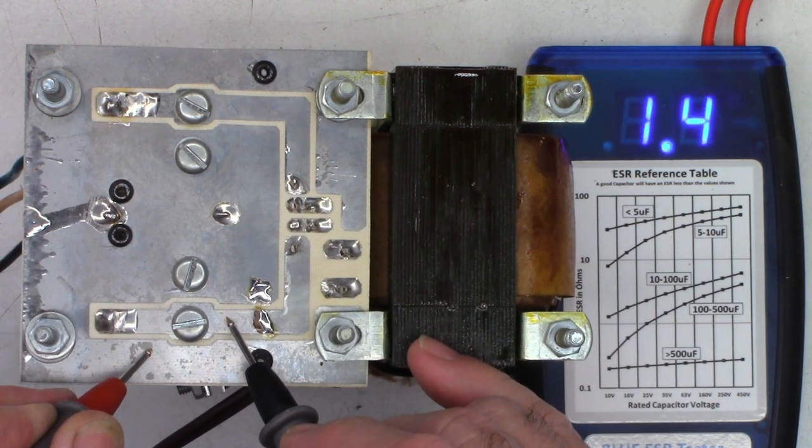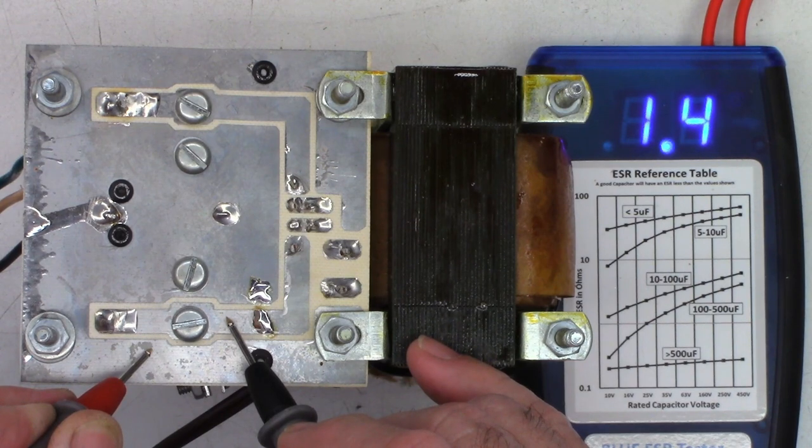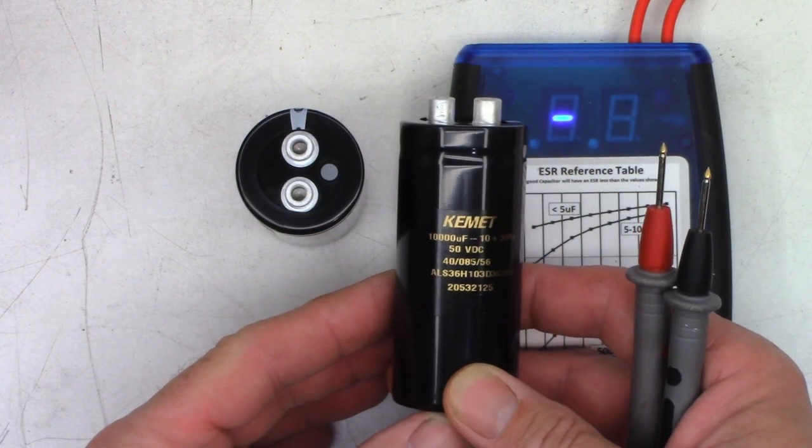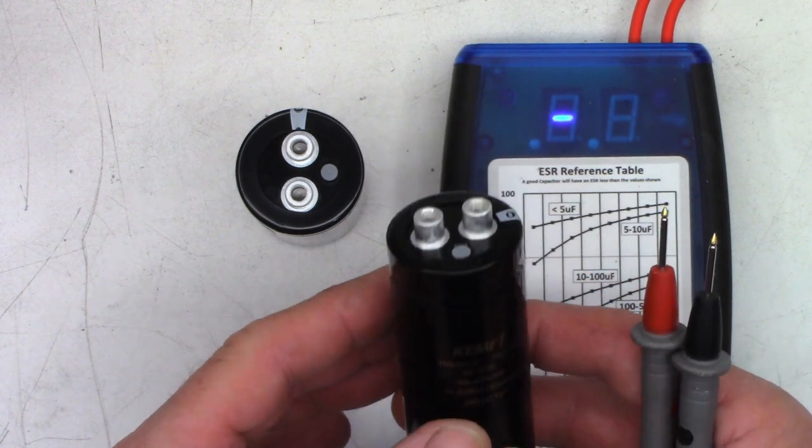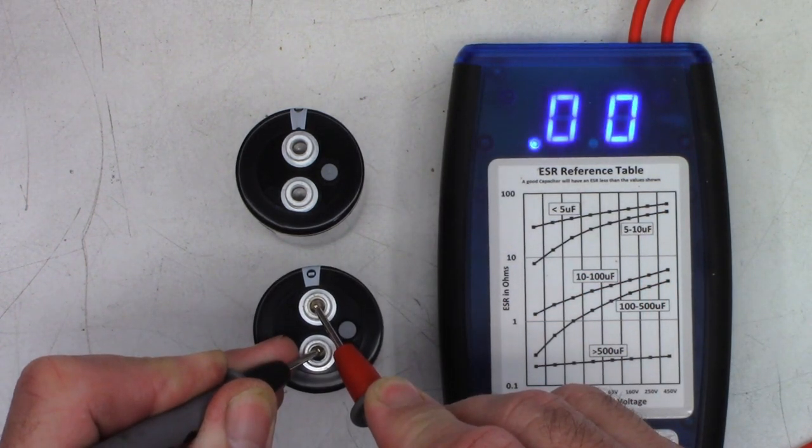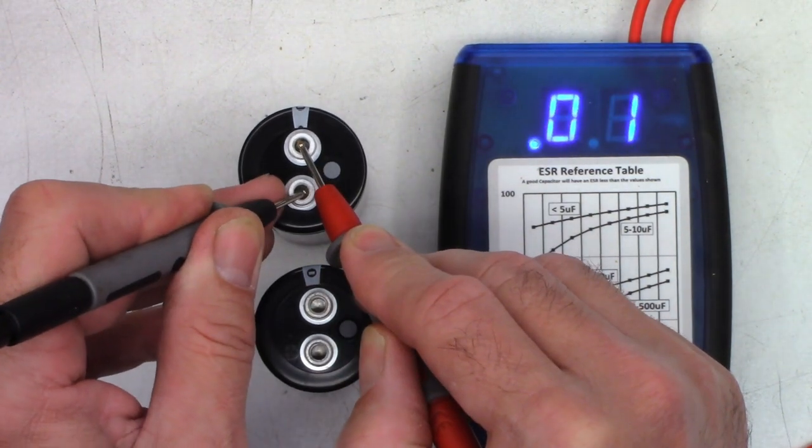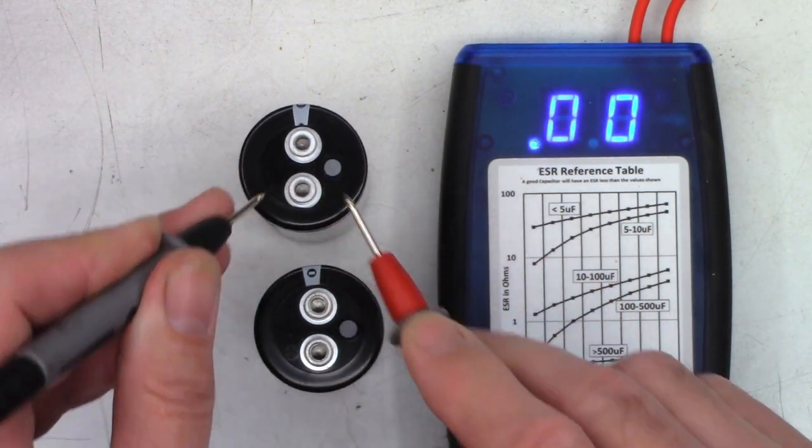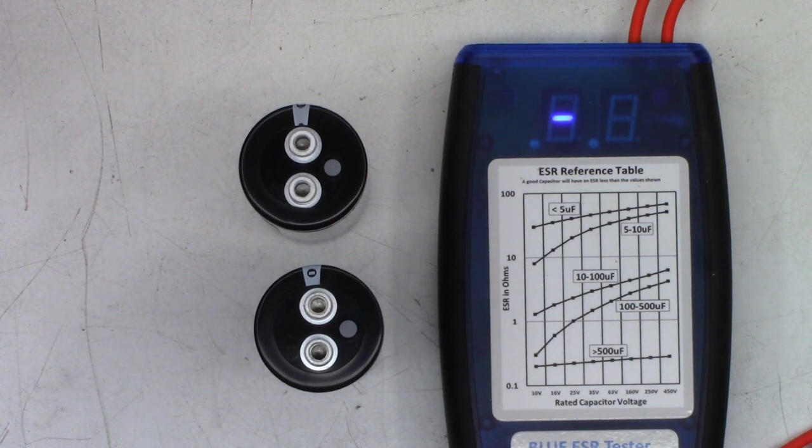Let's go ahead and test a couple of brand new caps and see what they test like. So I have a couple of brand new Kemet 10,000 microfarad 50 volt caps here. Let's go ahead and test those. 0.00. That's what I want to see. And 0.00. Perfectly good brand spanking new caps. So let's go ahead and test the rest of the caps on the other board and see how they test also.